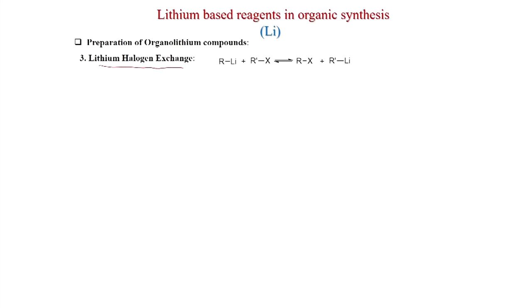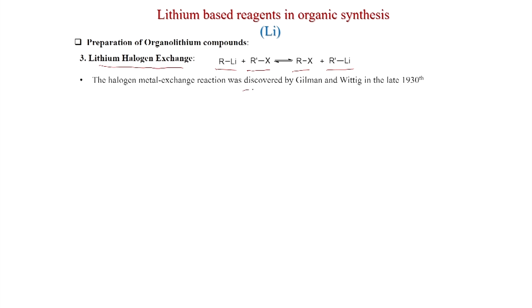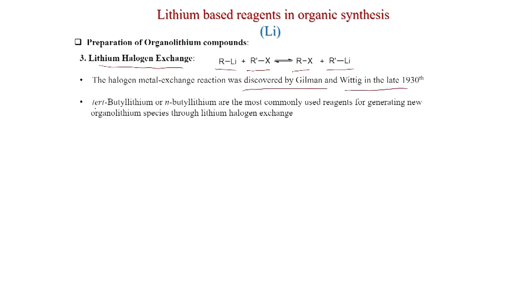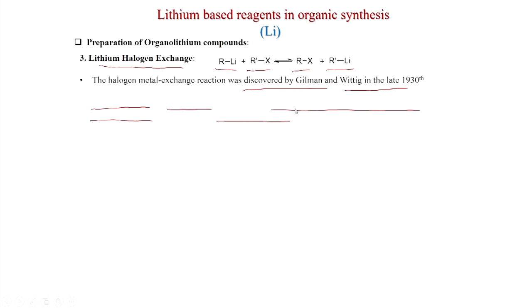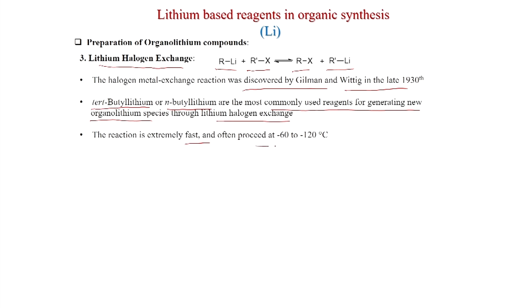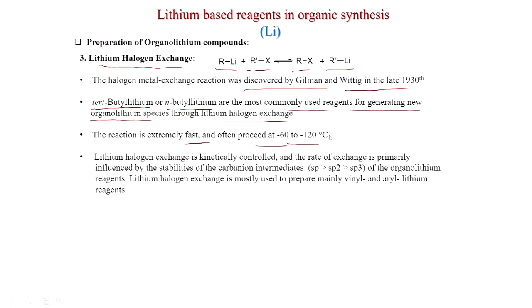In the preparation of organolithium compounds, lithium-halogen exchange is a popular method where commercially available n-BuLi reacts with an aryl halide to give the new organolithium compound. This reaction was discovered by Gilman and Wittig in the late 1930s. Tertiary butyl lithium and n-butyl lithium are the most commonly used reagents for generating new organolithium species. The reaction is extremely fast and often proceeds at −60 to −120°C. The rate of exchange is influenced by the stabilities of the carbanionic intermediates (sp, sp², sp³).